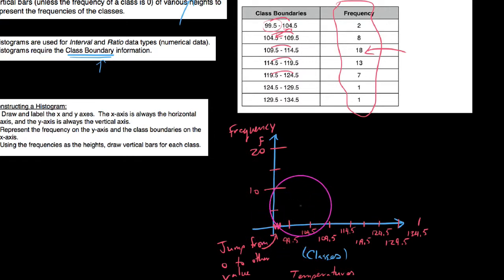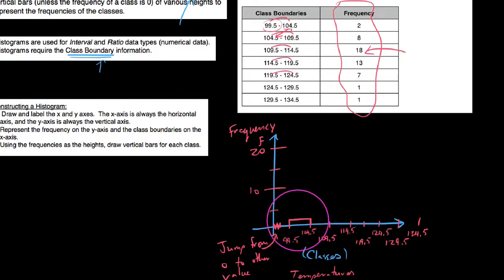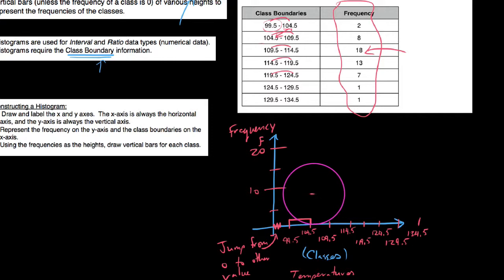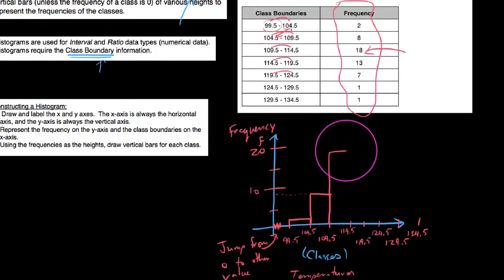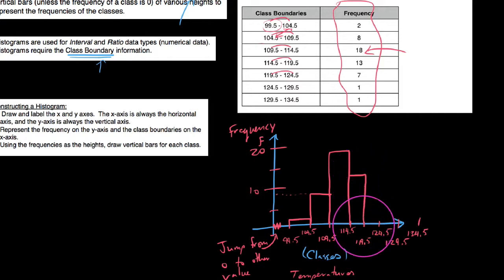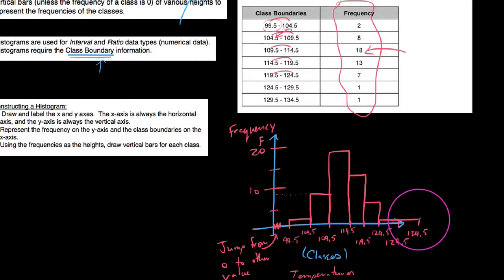We're basically just going to put a bar on top of each class. Our first class, 99.5 up to 104.5, had a frequency of 2, so we draw a bar at height 2. The class 104.5 to 109.5 is at a height of 8. The next bar is at 18, then 13, then 7. We have two last classes at heights of 1, which are about half of that first bar.